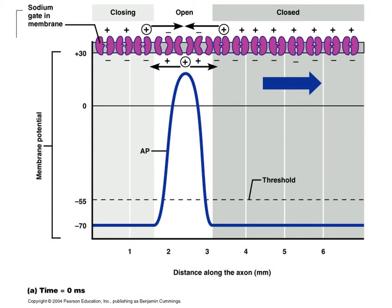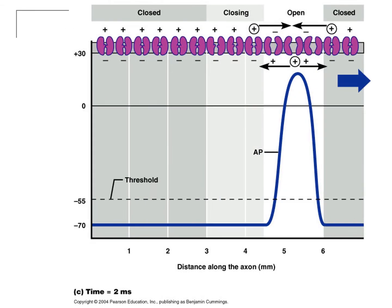The white area represents the action potential. The light gray area behind it is entering an absolute refractory period and moving to a relative refractory period. On the very left, there is an area of the axon where a second action potential can begin.